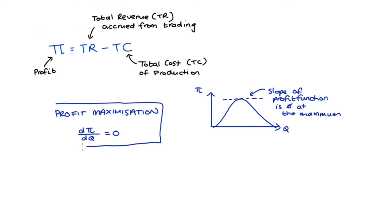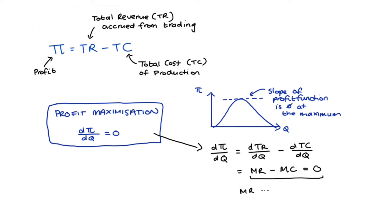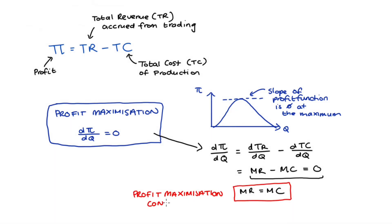To take the derivative of our profit function, we can take the derivative of the component parts. The derivative of total revenue with respect to quantity is marginal revenue, MR, and the derivative of total cost with respect to quantity is marginal cost, MC. Setting this equal to zero and adding MC to both sides, we get the condition that the firm maximizes profit by setting marginal revenue equal to marginal cost — that's our profit maximization condition.